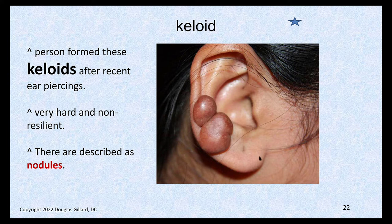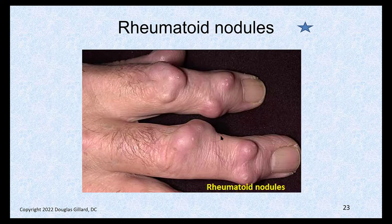Here's an interesting one. So when she was a baby she had her ear pierced with no problem. She turned 18 and wanted to pierce her ear two more times — wicked keloids formed after the ear piercings. Palpate them: super rock hard. So these are nodules — keloids are nodules. And here's a patient with rheumatoid arthritis with classic rheumatoid nodules in the DIPs and PIPs.